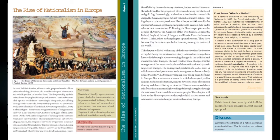Now let us look at Source A: Ernst Renan, 'What is a Nation?' Ernst Renan was a French philosopher who delivered a lecture at the University of Sorbonne in 1882. This lecture was published as a famous essay entitled 'Qu'est-ce qu'une nation?' — meaning 'What is a Nation?' In this essay, Renan criticized the idea that a nation is formed only by common language, race, religion, or territory.